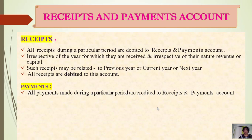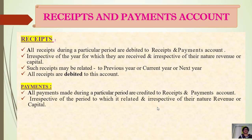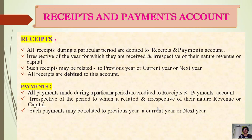All payments made during a particular period are credited to the receipt and payment account — receipts are debited and payments are credited. Payments are recorded in respect of the period they relate to and their nature — revenue or capital. Such payments may be related to the previous year, current year, or next year. If you are given three years, first see which year is previous, current, and next, and automatically you can solve the problem easily.